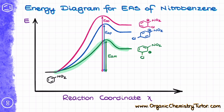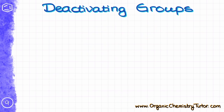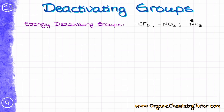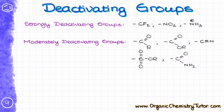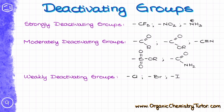So the picture is pretty much opposite from what we saw with activating groups. Just like with activating groups, we put deactivating groups into three categories. We have strongly deactivating groups that contain species with full positive charges, such as the nitro group or ammonium salts. We also have moderately deactivating groups — those are carbonyls, carboxylic acid derivatives, and similar compounds. And finally, we have weakly deactivating groups, which are typically halogens. While all activating groups are ortho-para directors, only strongly and moderately deactivating groups are meta-directors. The halogens, which are weakly deactivating, still direct substitution into the ortho and para positions due to their weak resonance stabilization of the carbocationic intermediate.